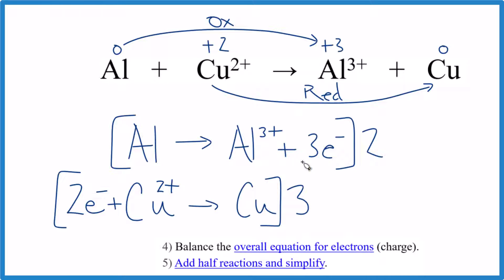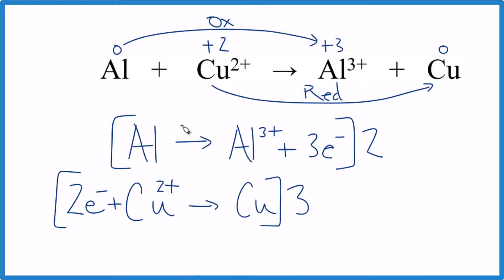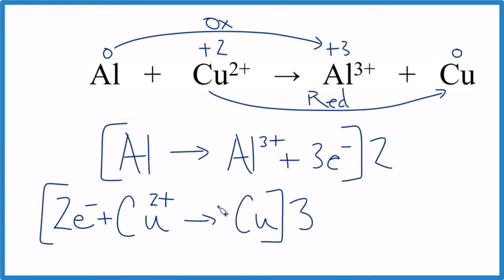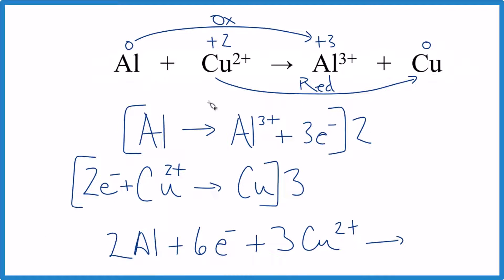What we do now is we add them back together, and we simplify. So on this side right here, these are the reactants. We'll do those first. So two times the aluminum, three times the two electrons, three times the Cu²⁺, that gives us this here. Let's shrink this down a little bit.